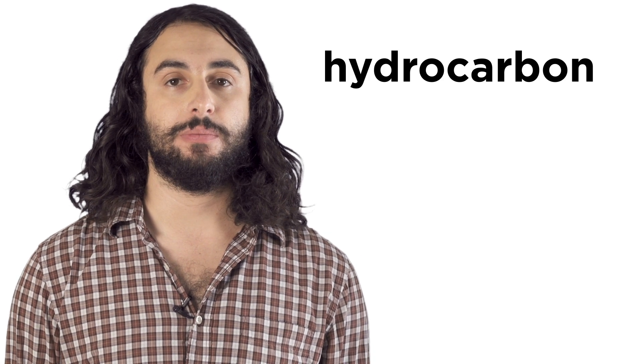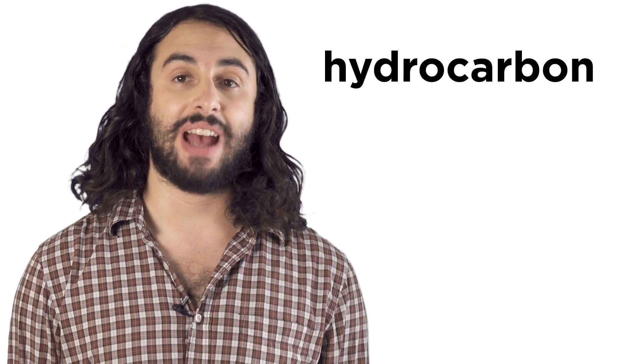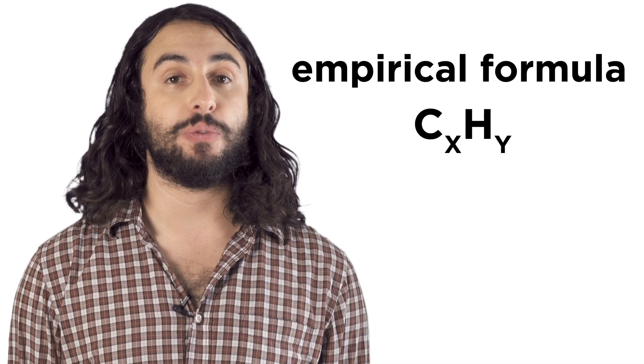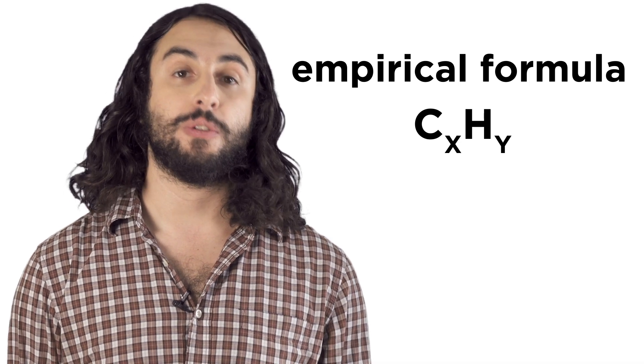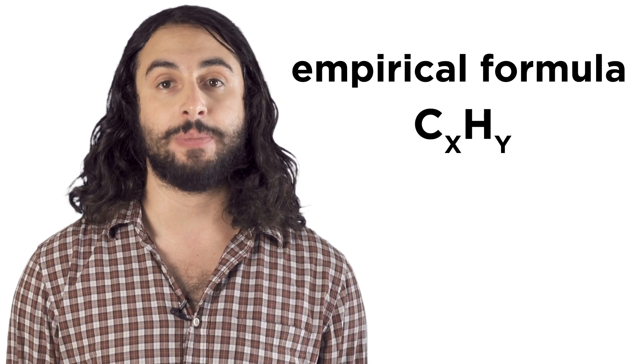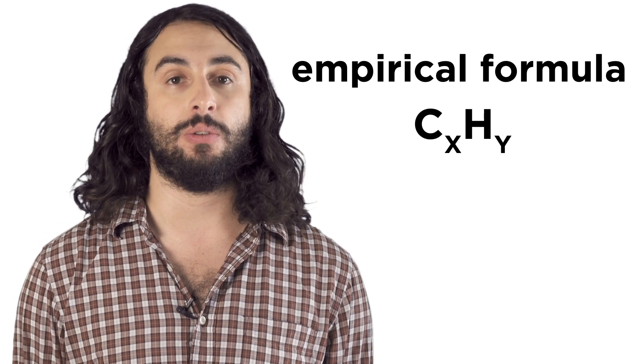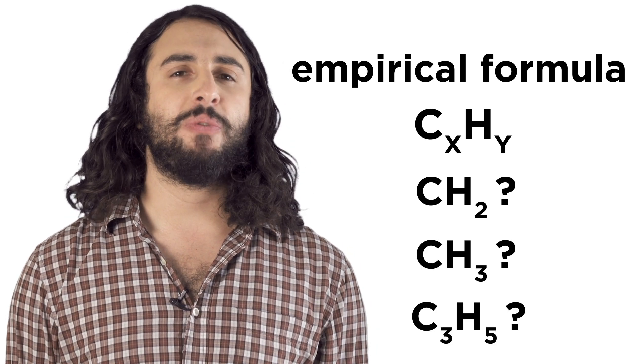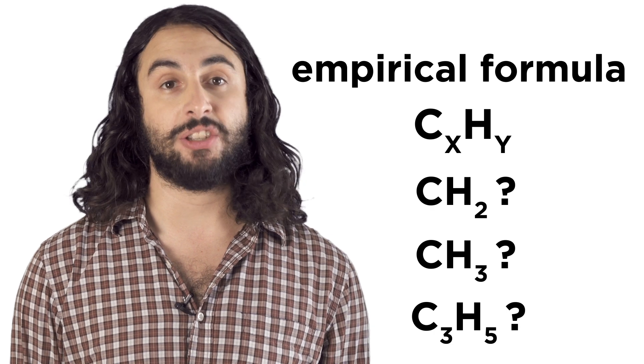Let's say we have an unknown hydrocarbon, a molecule consisting of just hydrogen and carbon. Let's also say we want to know the empirical formula of the hydrocarbon, or the lowest whole number ratio of carbon to hydrogen atoms in the molecule. Is it one to two, one to three, three to five? A while back we figured out a clever way to decipher this ratio.